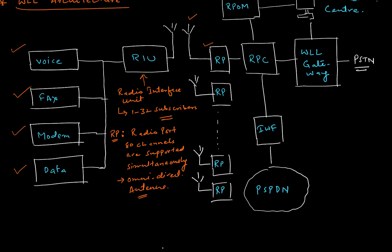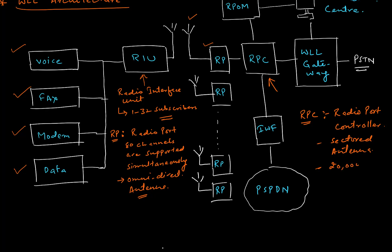After that, you have another component called RPC, which stands for Radio Port Controller. The Radio Port Controller has a sector antenna and supports around 20,000 subscribers and around 32 RPs, that is radio ports.